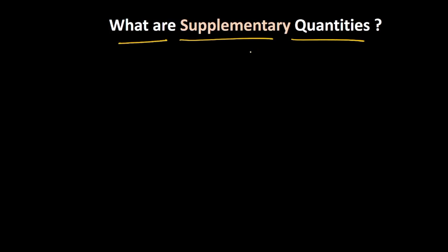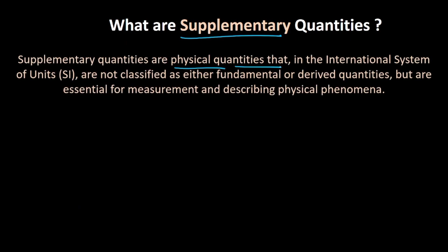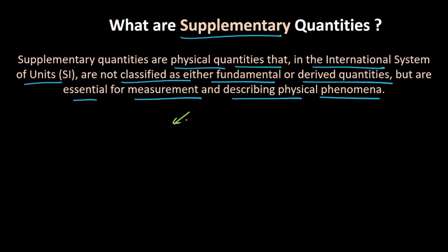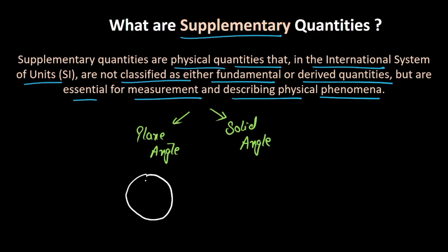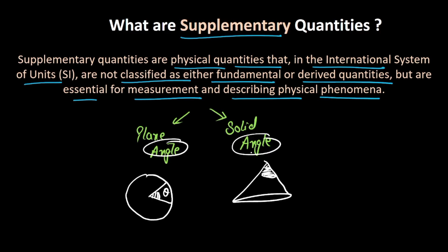Then what are supplementary physical quantities? Supplementary physical quantities are the ones that can neither be classified as fundamental nor as derived. The definition is: supplementary quantities are physical quantities that in the SI system are not classified as either fundamental or derived, but are essential for measurement and describing physical phenomena. There are two types: plane angle and solid angle. A plane angle is like the angle of a pizza slice, and a solid angle is like the angle of a birthday cap. Both are neither fundamental nor derived, so they are called supplementary physical quantities.